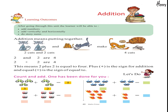This means two plus two is equal to four. Plus is the sign for addition and equal to is the sign of equal. Let's do: count and add — one has been done for you. Vertical addition: find the sum by drawing strokes — one has been done for you.